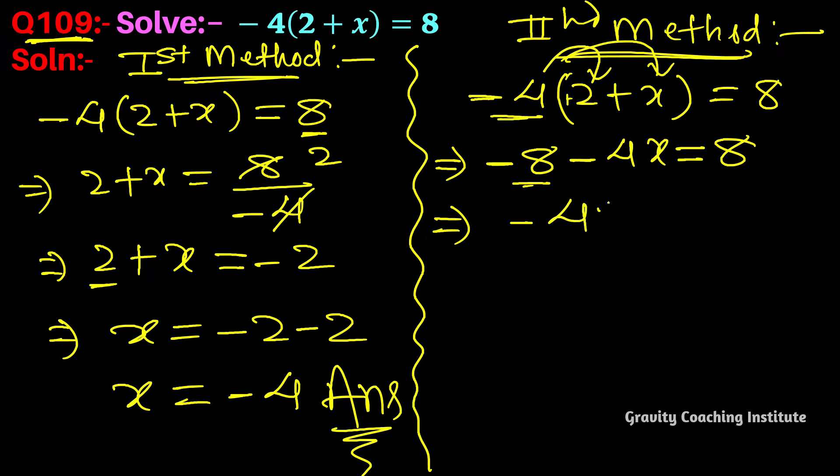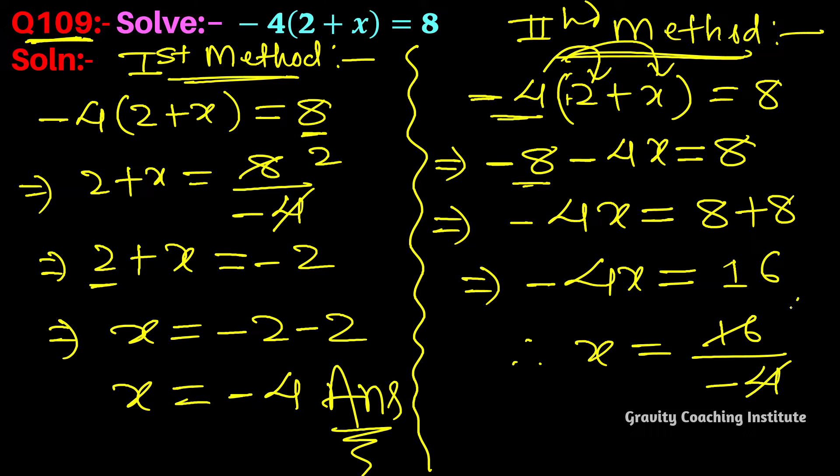Moving the constant term to the right-hand side, it becomes +8. So -4x = 8 + 8 = 16. Therefore x = 16 upon -4, so x = -4 is the answer. Now we will verify this solution.